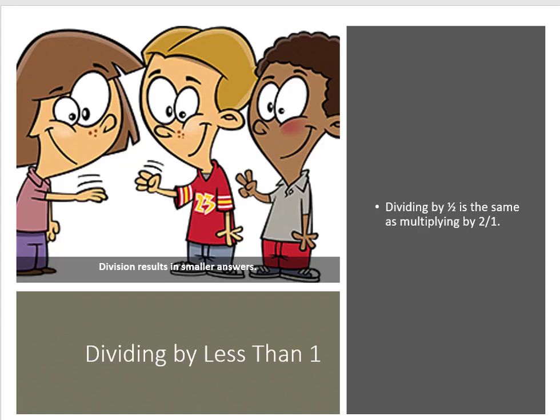Dividing by one half, or one over two, is the same as multiplying by two, or two over one. Don't try to make the natural number rules make sense, because they don't in this situation.